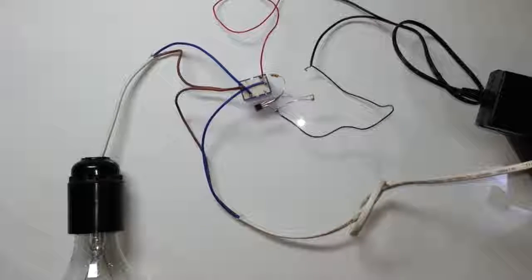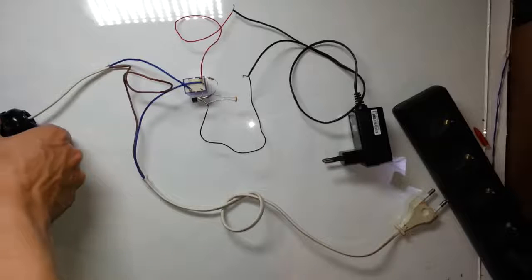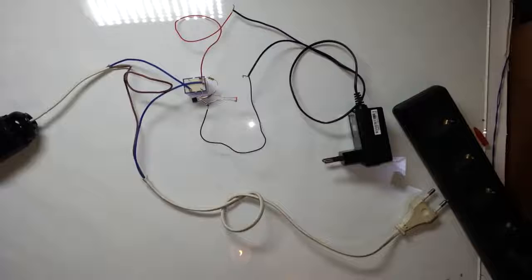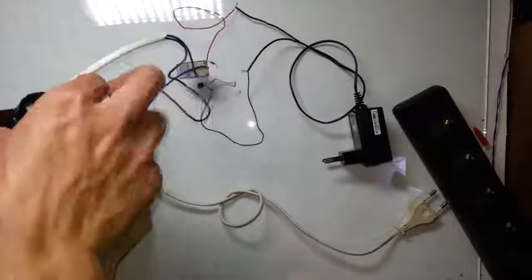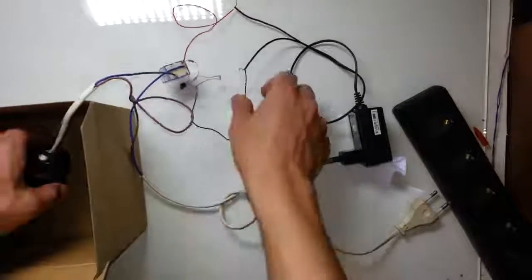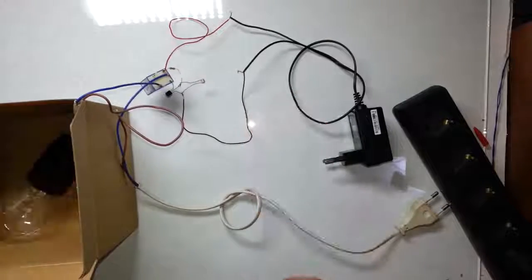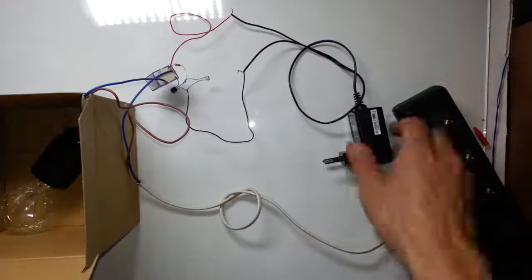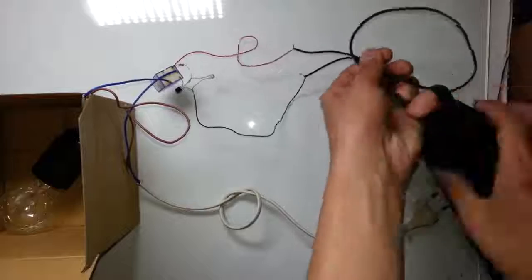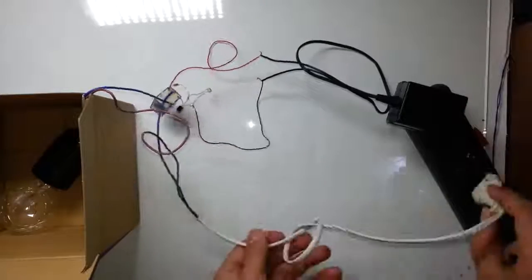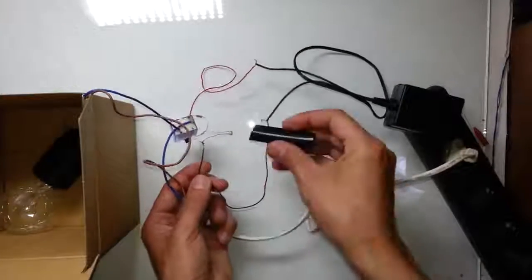And it means that for the normal work of this device, sensor shouldn't sense any light from the bulb that it is in control of. Let's perform one more test. But this time I'll put the light bulb in the box. Let's test it again.